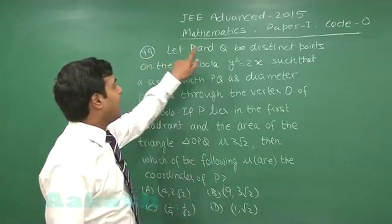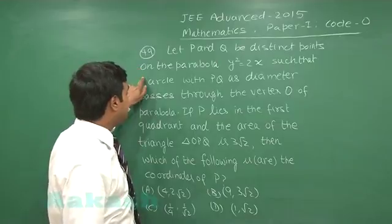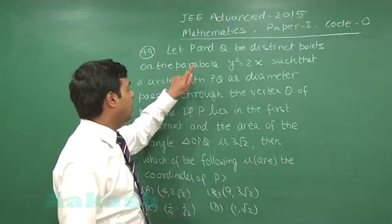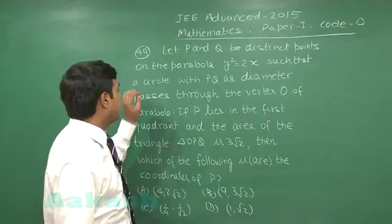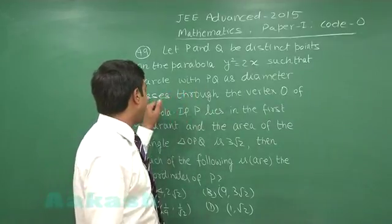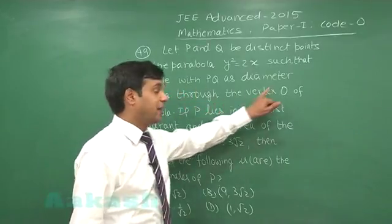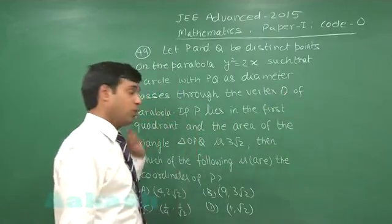Let P and Q be distinct points on the parabola y square equals 2x such that a circle with PQ as diameter passes through the vertex O of the parabola.